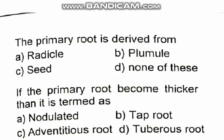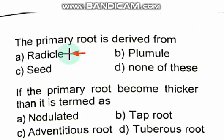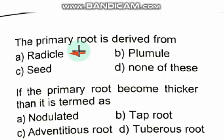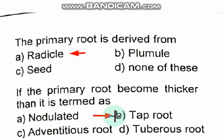Welcome. We will discuss very important MCQs of botany. The primary root is derived from the radicle — radicle is the correct option. Next question: if the primary roots become thicker, then it is termed as a tap root. Primary roots are derived from the radicle, and if they become thicker it is called a tap root.